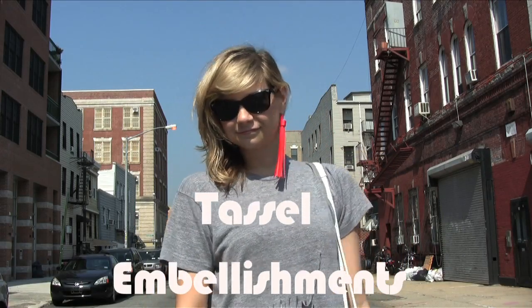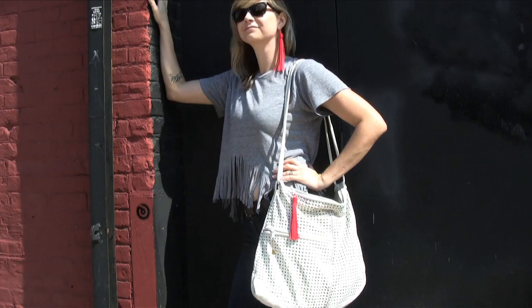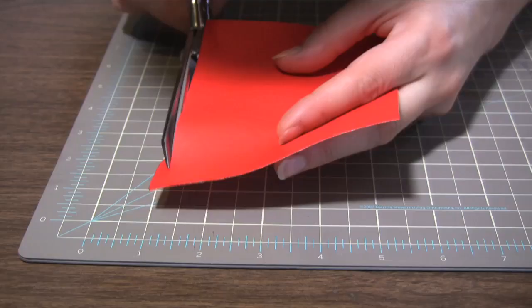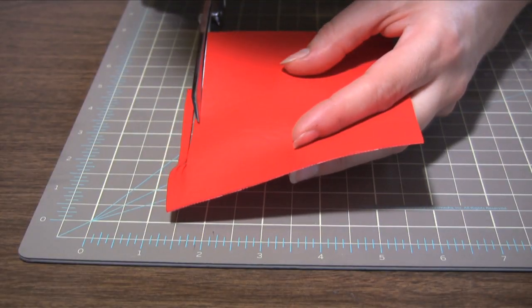Tassel embellishments are all the rage on the runways right now. Here's a really easy way to make your own. Fringe and cut a 2 by 4 inch piece of faux leather.